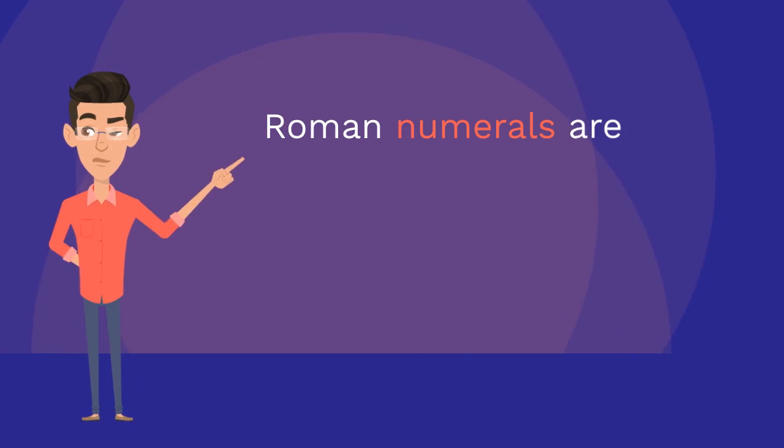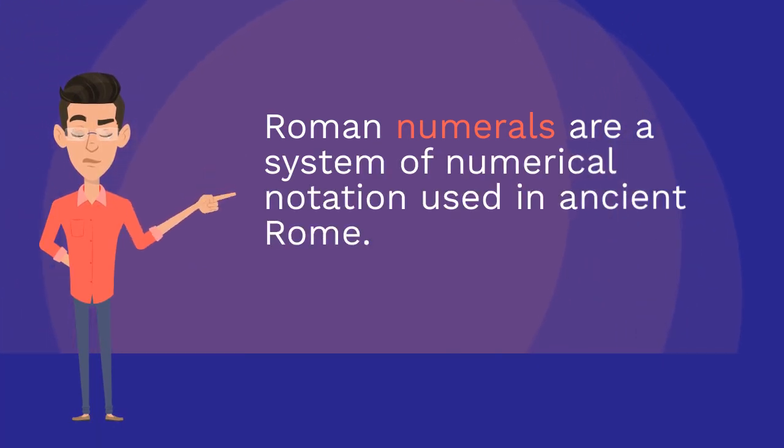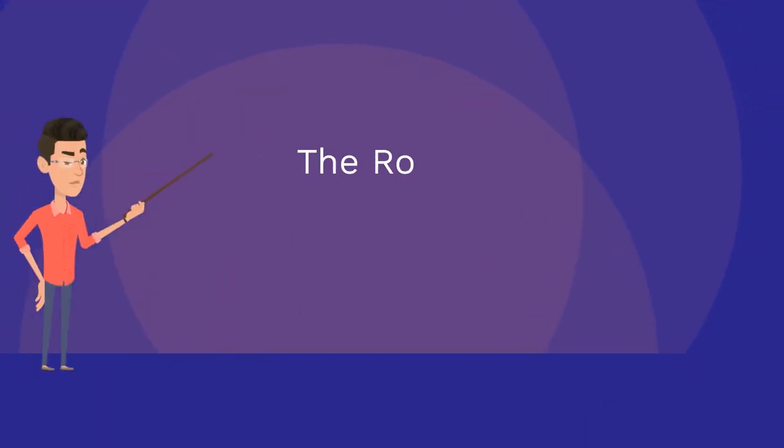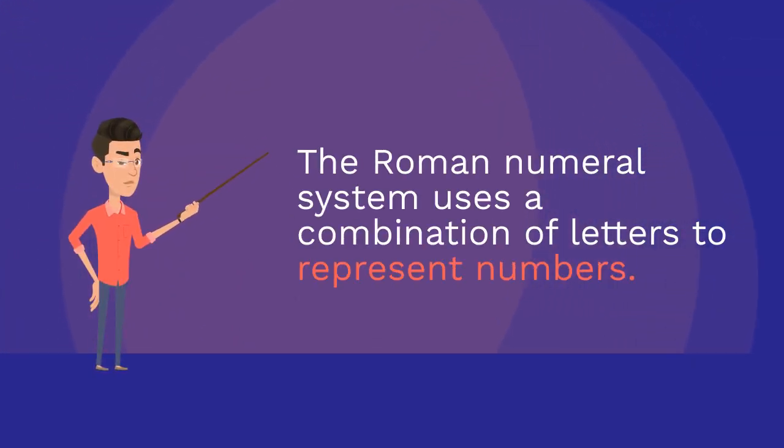Roman numerals are a system of numerical notation used in ancient Rome. The Roman numeral system uses a combination of letters to represent numbers.